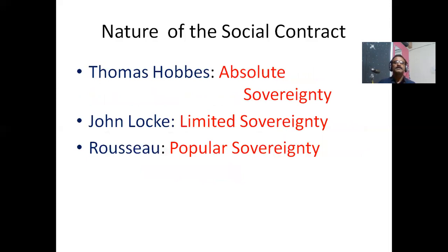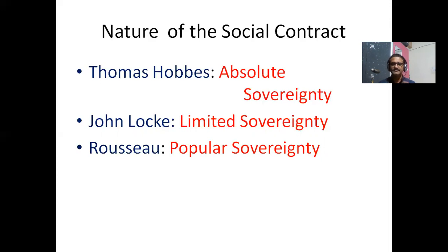Nature of social contract: According to Thomas Hobbes, people entered into contract and surrendered their natural rights to the sovereign power, wanting absolute sovereignty. Because Hobbes thought human beings were cruel and had to be controlled, there must be an absolute sovereign power. He developed his theory during chaotic conditions and civil war in England between parliament and the king. That is why he favored absolute monarchical government to protect human beings and property.